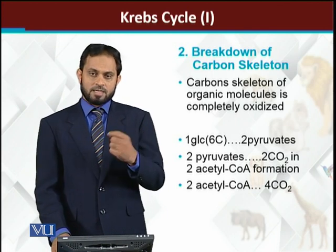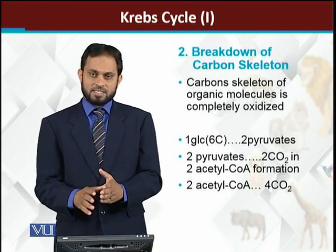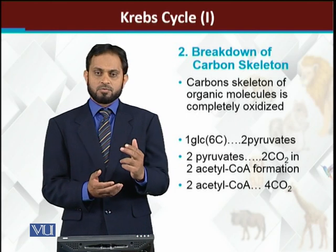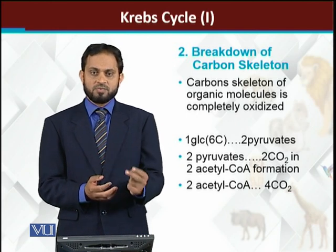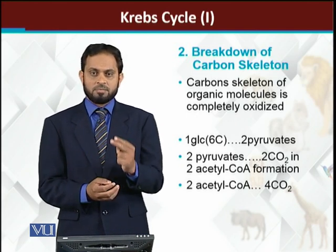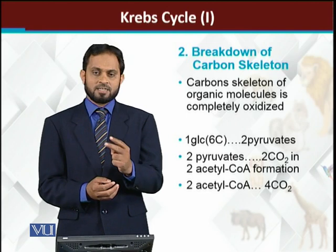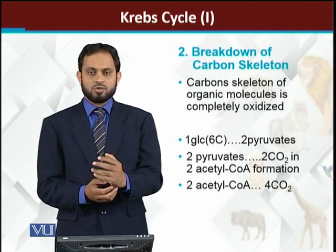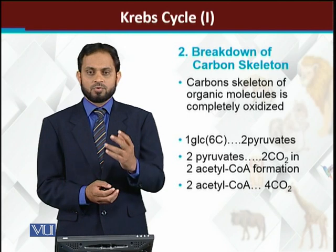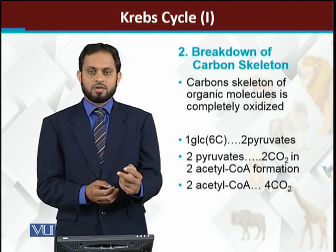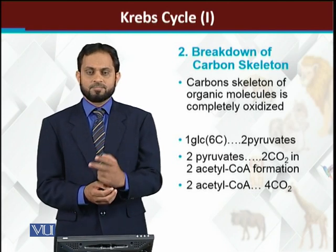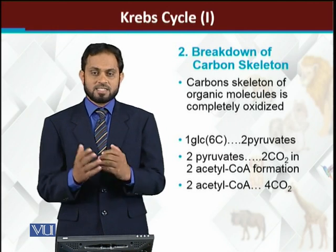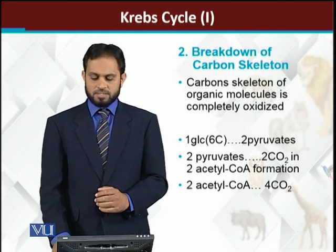Overall, step-wise: from one glucose, two pyruvates form, then two acetyl-coenzyme A molecules form with two CO₂ released. Both acetyl groups enter the Krebs cycle — one acetyl contributes two carbons and two acetyl groups contribute four carbons, totaling six carbons released as six CO₂ molecules.